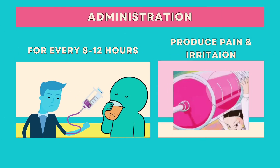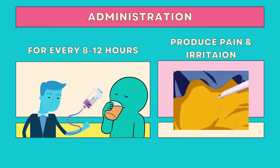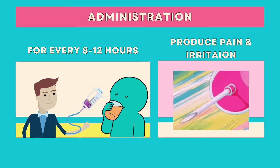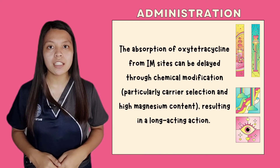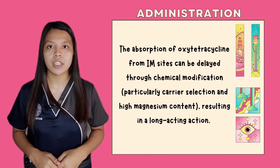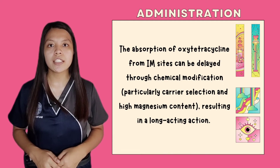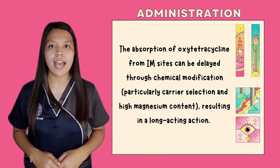For its administration, tetracyclines are administered orally or IV every 8 to 12 hours. IM injections produce pain, irritation, and sterile abscesses unless special buffered solutions are used. The absorption of oxytetracycline from IM sites can be delayed through chemical modification, particularly carrier selection and high magnesium content, resulting in a long-acting action.